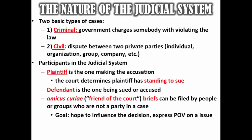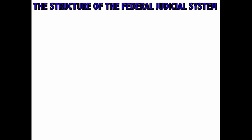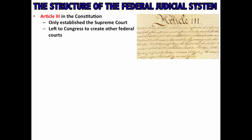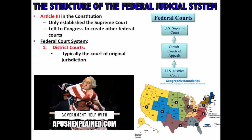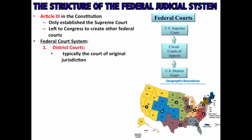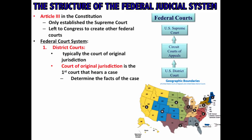Now let's look at the structure of the federal judicial system. Article 3 established the Supreme Court but left Congress the ability to create other federal courts. At the base you have district courts, which are typically the court of original jurisdiction — the first court that hears a case. At the district court level, they determine the facts of the case, so this is where you'll have a trial with testimony and evidence being presented.